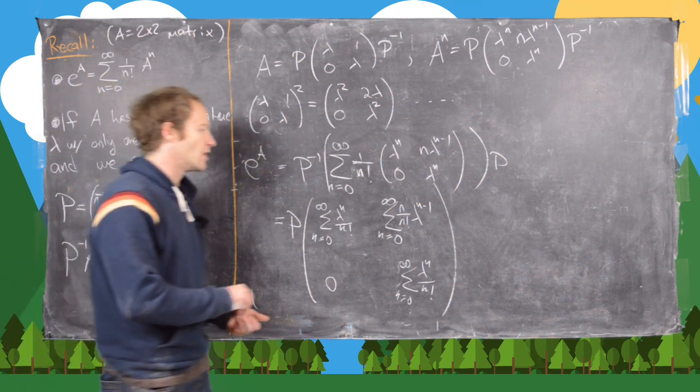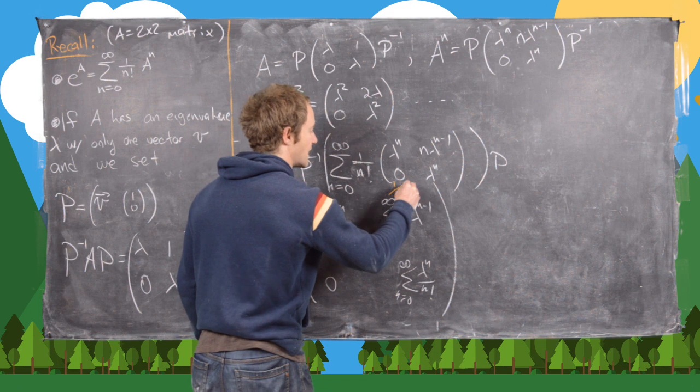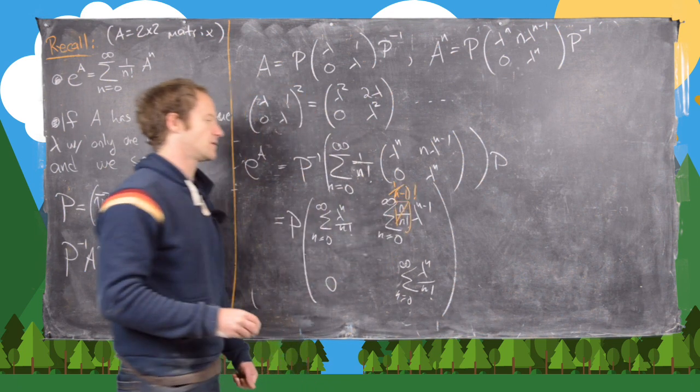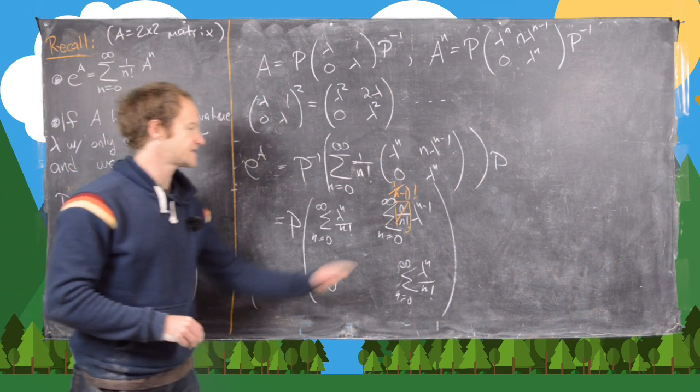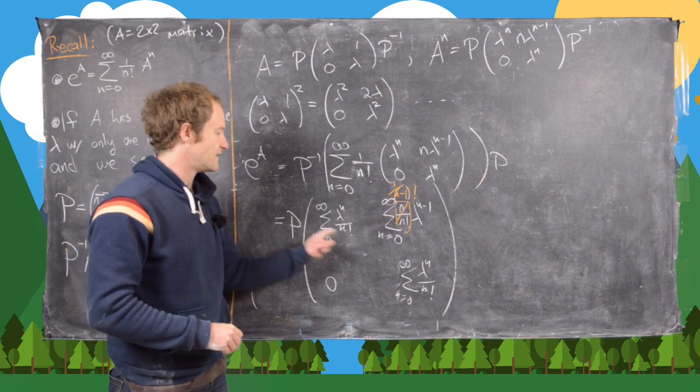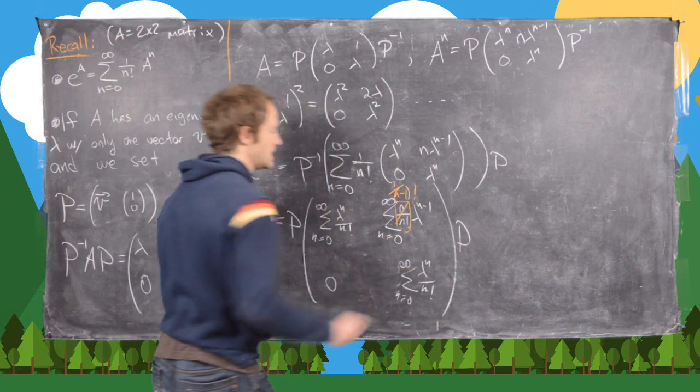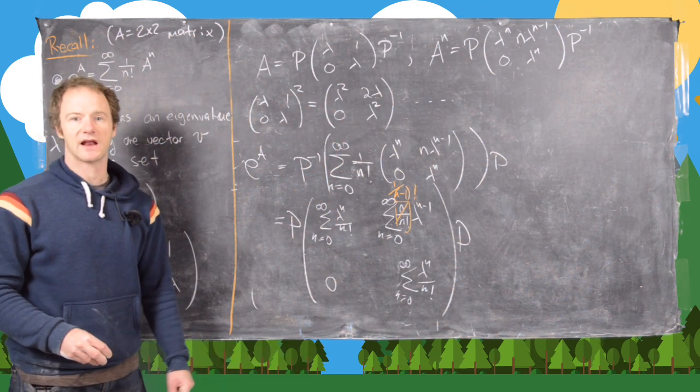So now what I want to notice here is that this fraction will easily cancel to 1 over (n-1) factorial. And since this sum is exactly the same as these in the infinite limit, all of these add up to the same thing. In fact, I forgot a P there. In fact, they're all going to add up to e^λ.